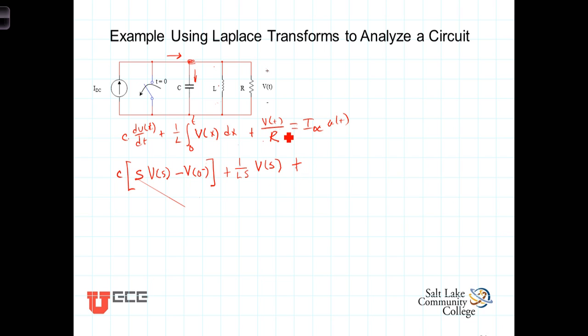Plus Laplace transform of V of T is just V of S times, or multiplied by 1 over R, or divided by R. On this side, then, we have IDC, which is the constant, or scaling value, IDC, and Laplace transform of U of T is 1 over S.